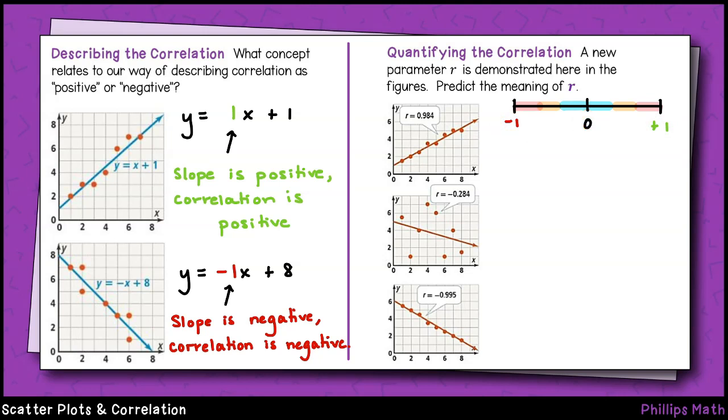Typically, an r value has to be greater than positive 0.5 or negative 0.5 to indicate a moderate or strong correlation. Any magnitude less than that would be considered a very weak or low correlation. Any magnitude greater than that would be considered a higher or strong correlation.